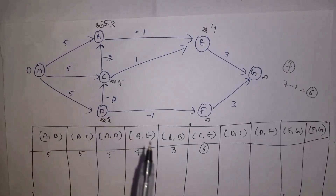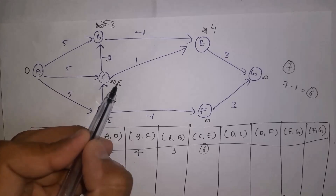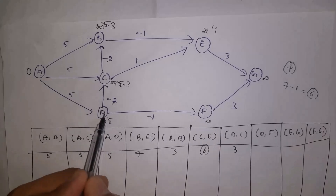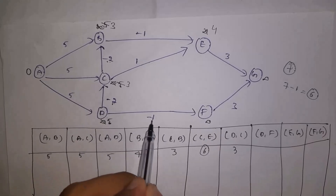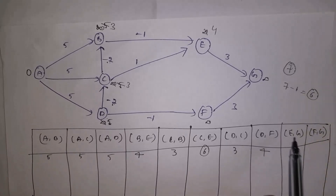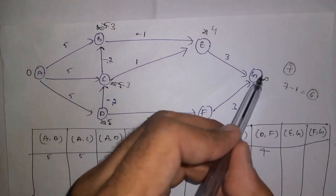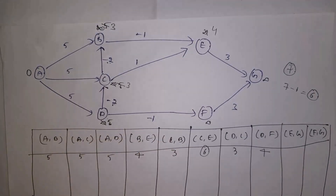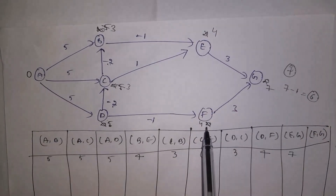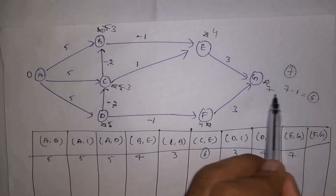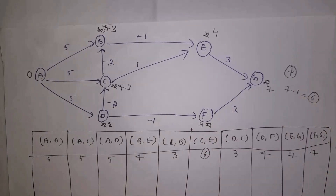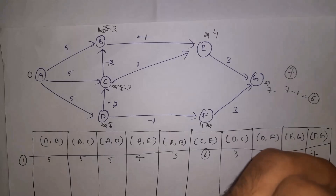From C to E: C's distance is 5, so 5 plus 1 equals 6, but 4 is already smaller — no change. From D to C: D's distance is 5, so 5 minus 2 equals 3, which is smaller than 5 — replace 5 with 3. From D to F: 5 minus 1 equals 4. From E to G: 4 plus 3 equals 7 — replace infinity with 7. From F to G: 4 plus 3 equals 7 — already 7, no change. First visit complete; need to visit 5 more times.